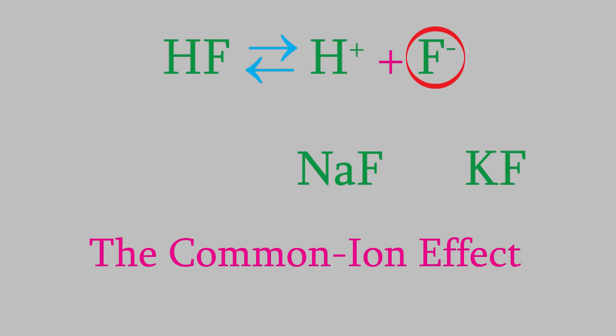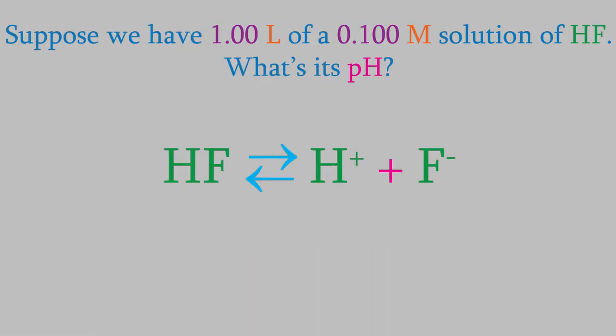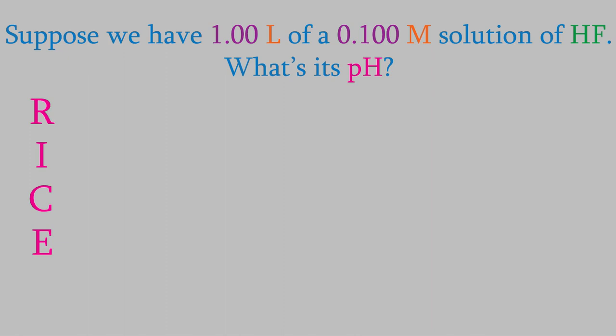Let's see an example of how exactly this works. Suppose we have one liter of a 0.100 molar solution of hydrofluoric acid. We'll add sodium fluoride to it in a minute, but first let's figure out what the pH is right now, before we disturb the equilibrium. To find the pH, we need to draw a RICE table. In the R row we write the balanced reaction; in the I row we write the initial concentrations. The initial concentration of HF is 0.100 molar, and before the reaction starts, we have no hydrogen or fluoride ions, so those concentrations are zero.